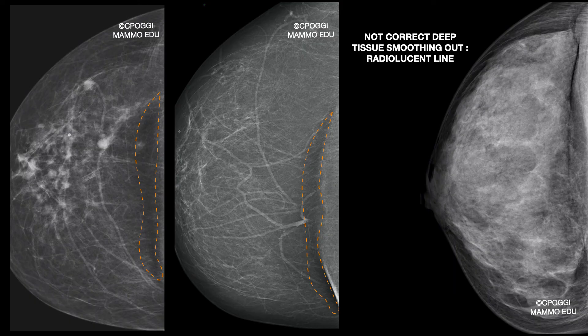We talked about pseudo-artifacts in the first lesson. In this case it is not a pseudo-artifact — it is a real one, due to not effective smoothing action in the IMF. Very interesting is this last example: you can see a thick, radiolucent line. It is air trapped in this portion, which, even if not clearly visible, extends through almost the entire breast.